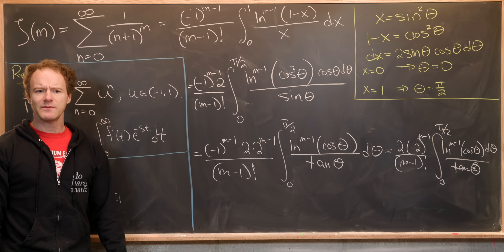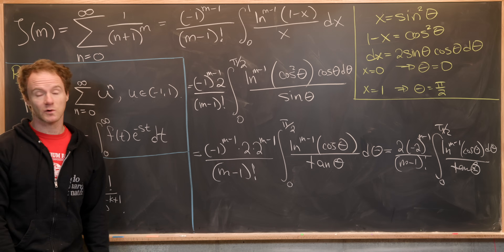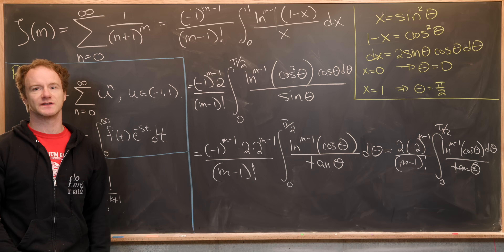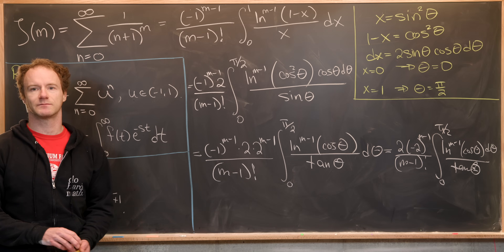We can simplify by pulling the 2 to the m minus 1 together with minus 1 to the m minus 1, giving 2 times (minus 2) to the m minus 1 over m minus 1 factorial, times the integral from 0 to pi over 2 of ln to the m minus 1 of cosine theta, divided by tangent theta, d theta. And there we have another surprising identity for the Riemann zeta function. If you want to keep playing this game and see what other identities you can derive, post your results in the comments.